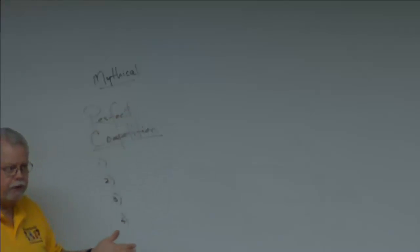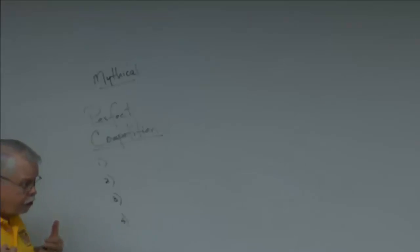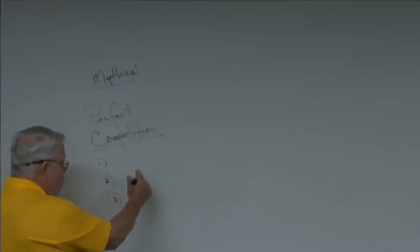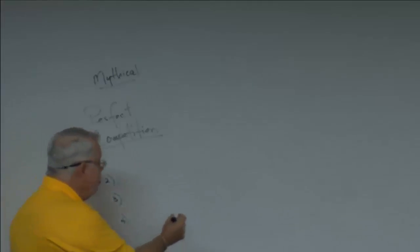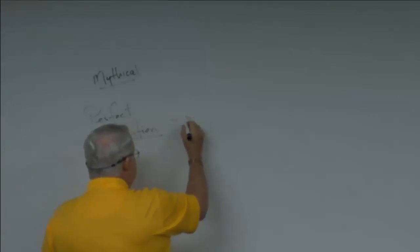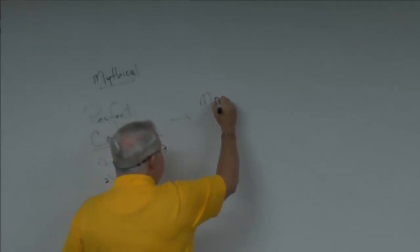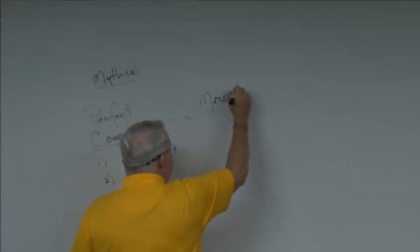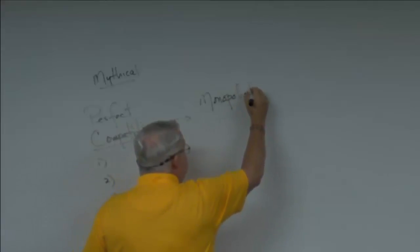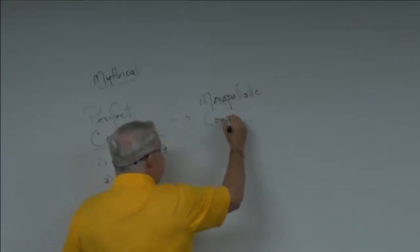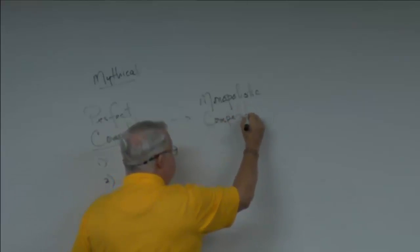We're going to talk about these four assumptions and then say: what if you make the model a little more realistic? Then we get into something called monopolistic competition — the second market structure we're going to study, and it will be on the next exam, just these two.